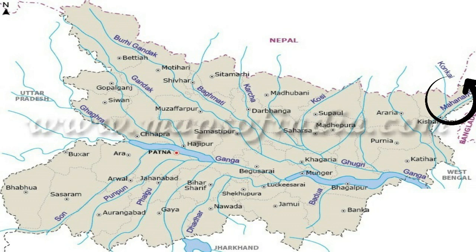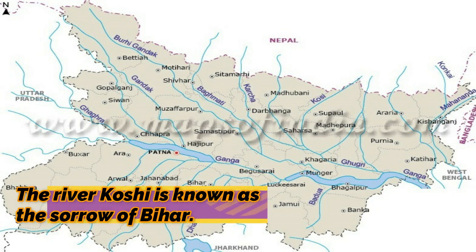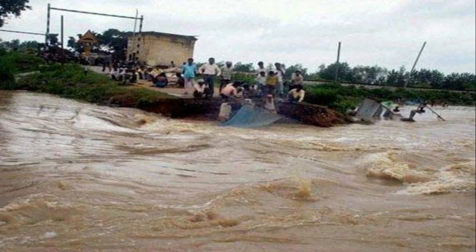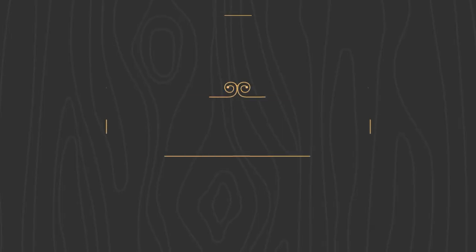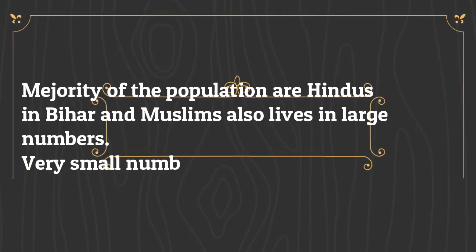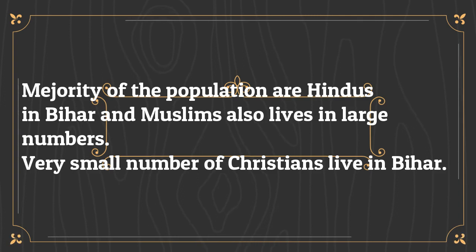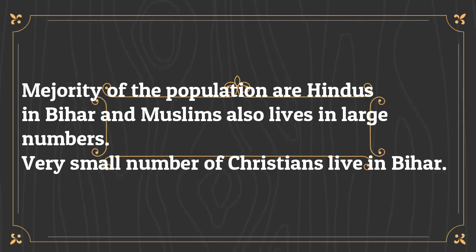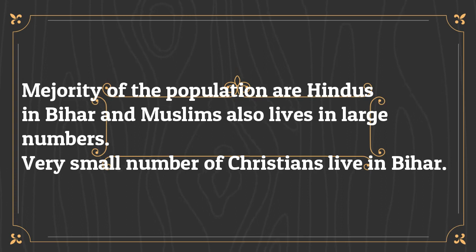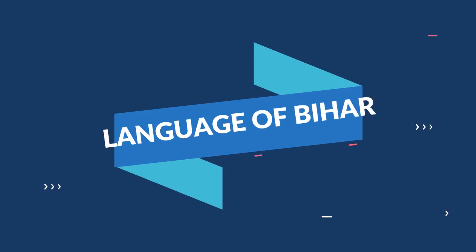The river Kosi is known as the 'sorrow of Bihar' because it causes huge, destructive floods every year. The majority of the population here are Hindus, and Muslims also live in large numbers. A very small number of Christians live here.